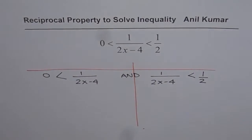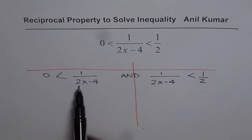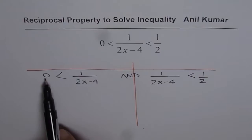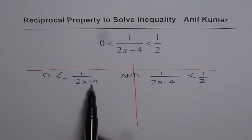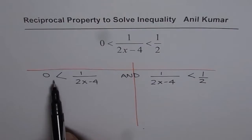Now on the left side we have the reciprocal of 2x - 4. Since it is greater than 0, it means that 2x - 4 should be greater than 0.